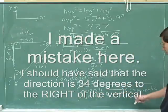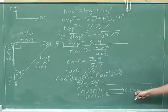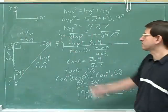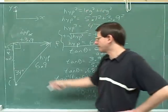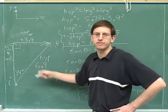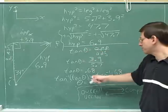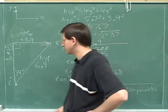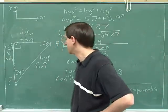That's one of the skills we learned — how to go from right to left: take the components and figure out the overall vector. Remember that you can use the Pythagorean theorem to take the two components and figure out the magnitude of the overall vector. And then you can use tangent and inverse tangent to take the components and figure out the direction represented by the angle of the overall vector.